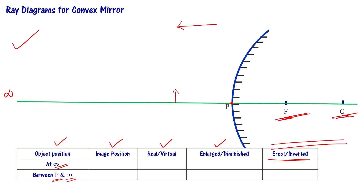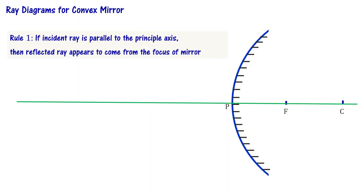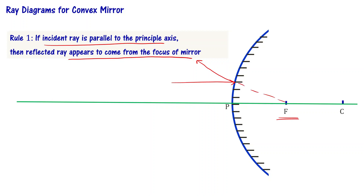To represent one point of an object in the image, we need two rays. For drawing those two rays, we use one of three rules. Rule number one says that if the incident ray is parallel to the principal axis, then the reflected ray appears to come from the focus of the mirror.